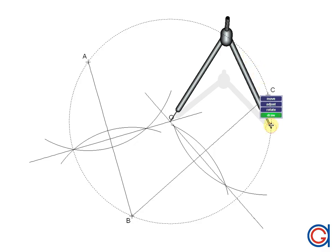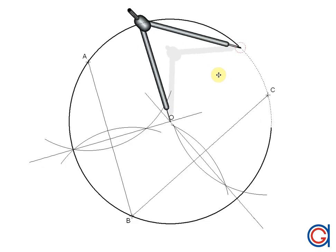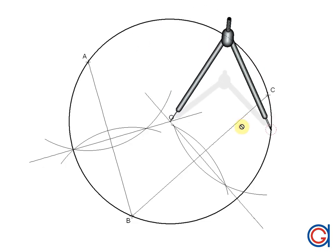So now finally, setting our compass on the point O, we will draw our circle in a thicker line. If we have been working with precision and accuracy, the circle should go through the points A, B and C, as shown here.